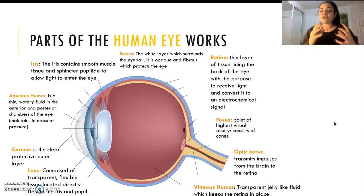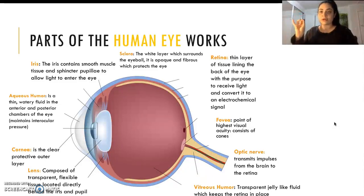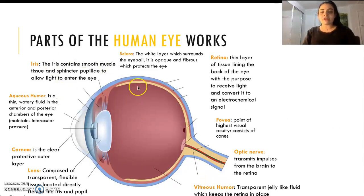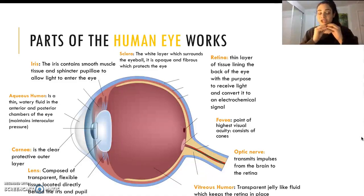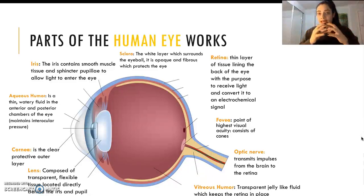If it was not round, the image would not effectively be processed onto the specific point in the retina, which we're going to discuss in a later segment. We then have the iris, which is a combination of smooth muscle cells and sphincter pupillae. This allows the contraction and expansion of the eye to allow certain amounts of light in.